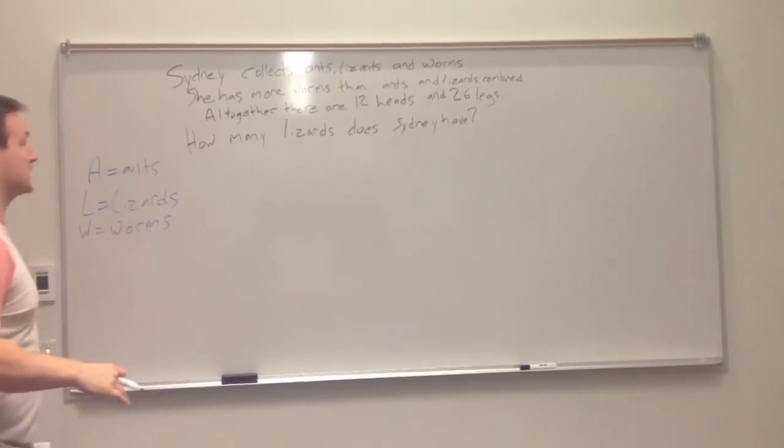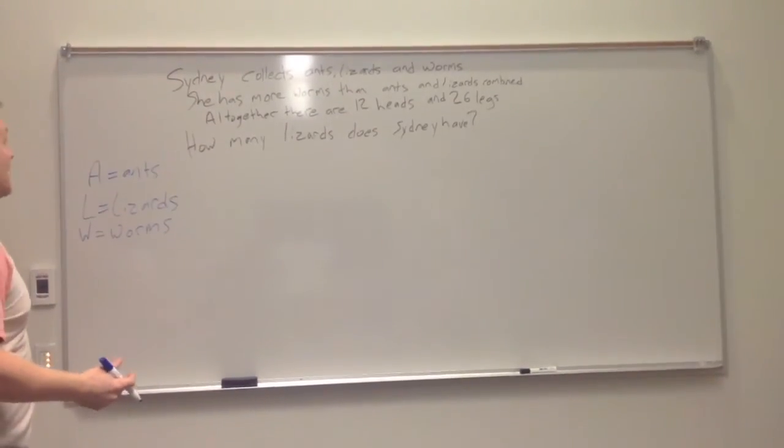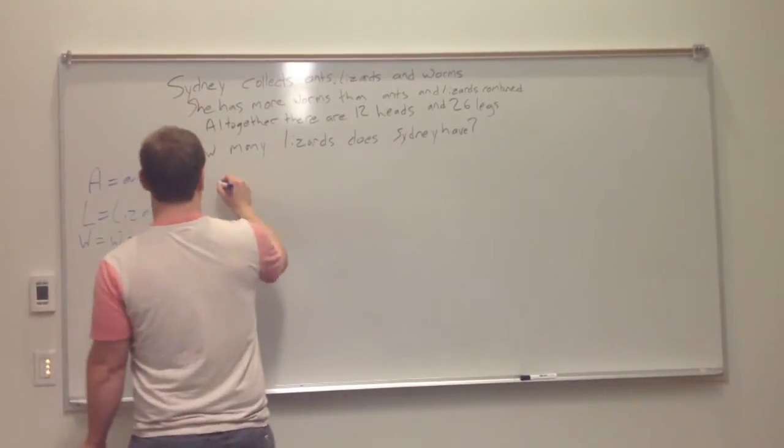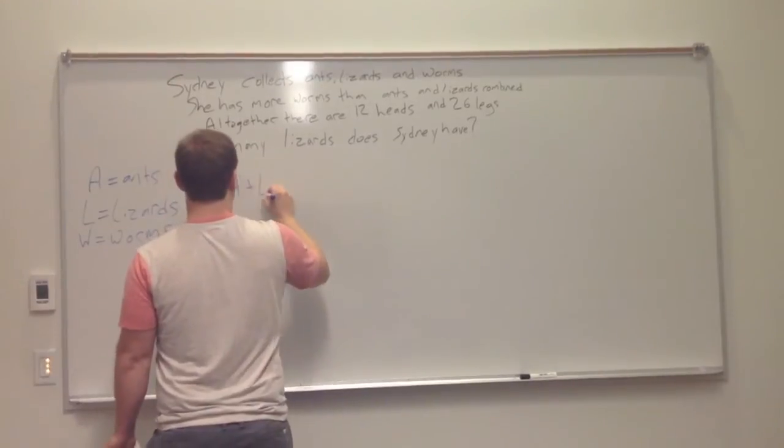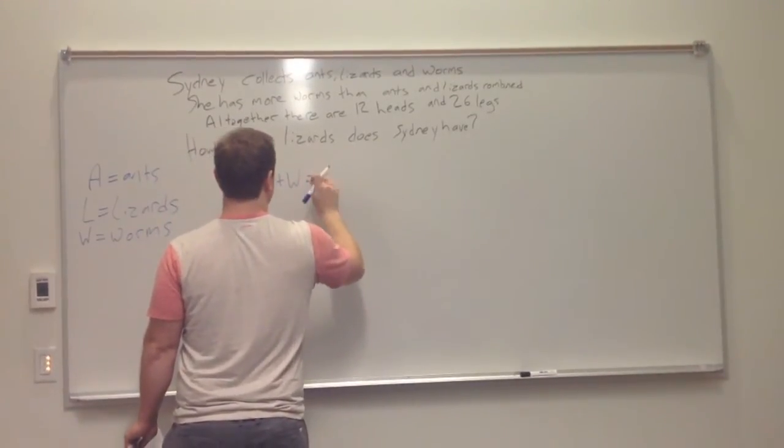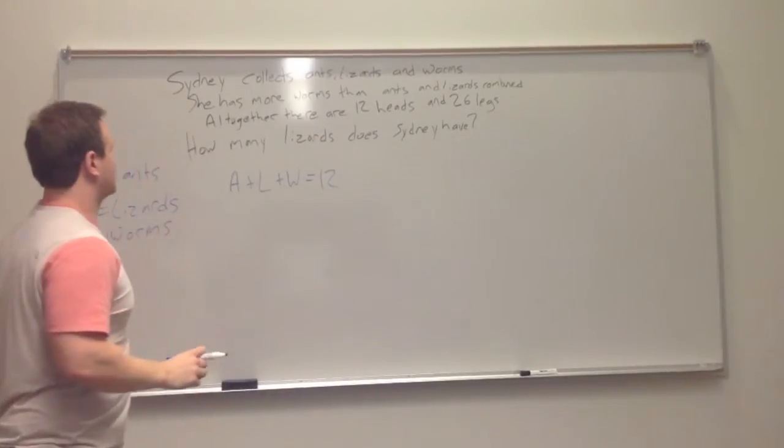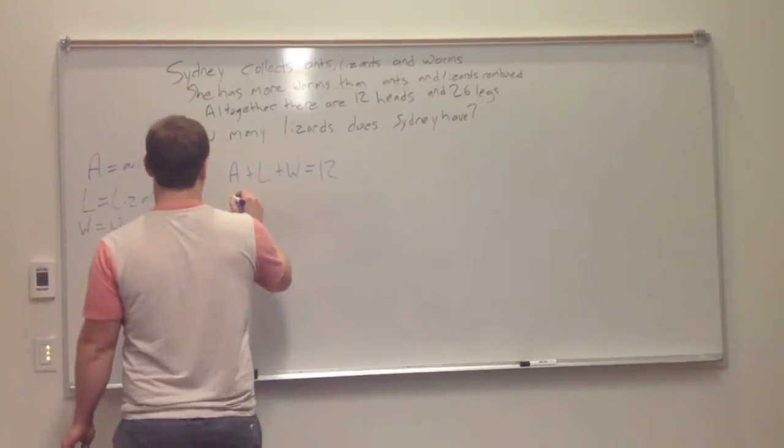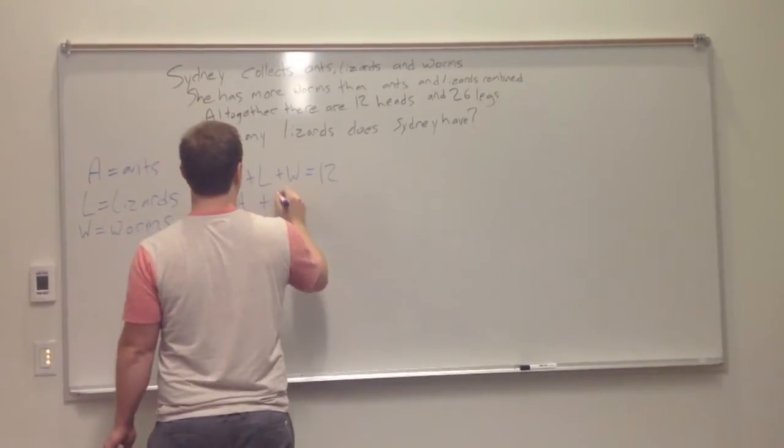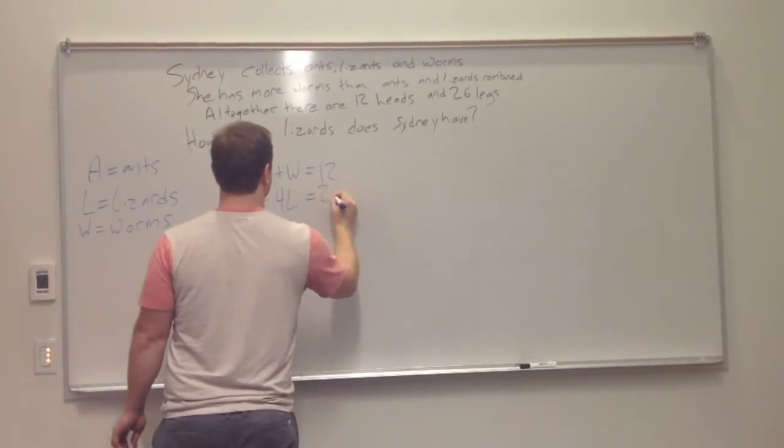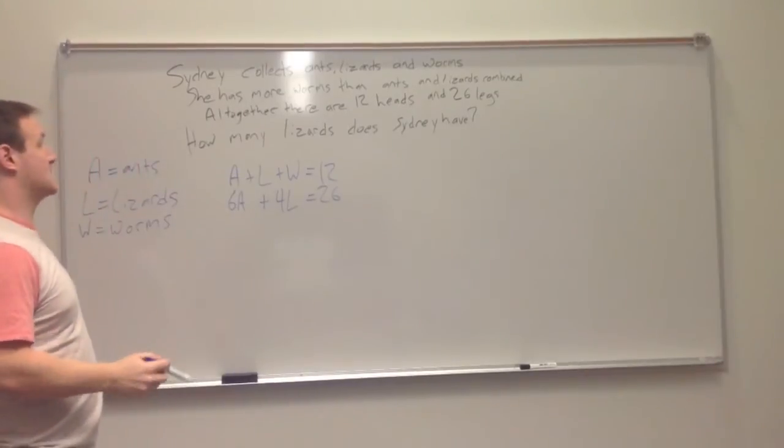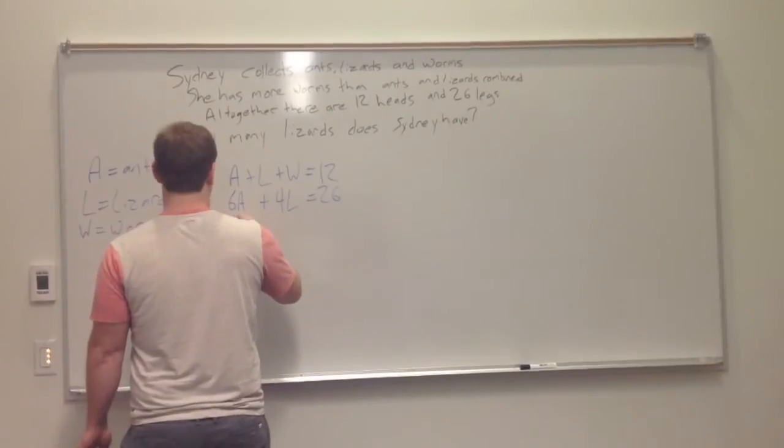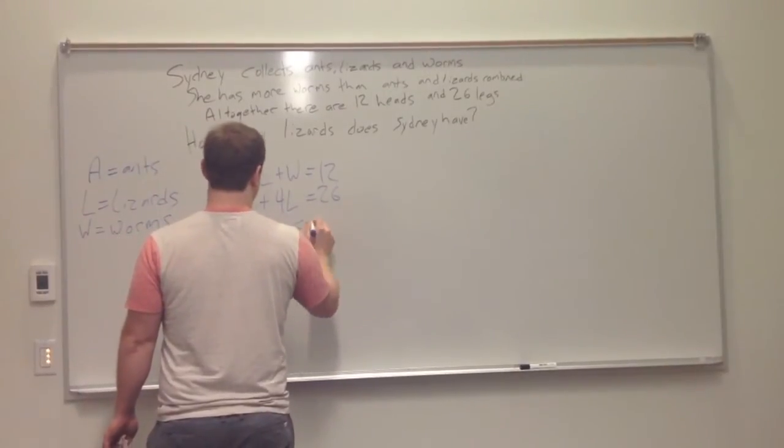From the question there's a lot more information given. It says there are 12 heads in total, every animal has to have one head, so it will give us the equation: A + L + W = 12. There are 26 legs in total and since worms don't have legs, ants have 6 legs, so 6A, lizards have 4 legs, equals 26 total legs. Now it also says that there are more worms than ants and lizards combined. So by that we know that A + L < W.